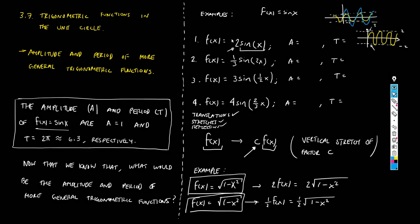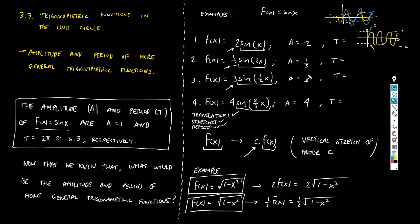So what does this mean? The amplitude of each of our four functions is basically the number multiplying the primitive trigonometric function. We have 2·sin → amplitude = 2. Since the amplitude of sin(x) is 1, multiplying by 2 gives amplitude 2·1 = 2. Similarly: ⅓·sin → amplitude = ⅓; 3·sin → amplitude = 3; 4·sin → amplitude = 4. The amplitude is simply the number right in front of the sine function.